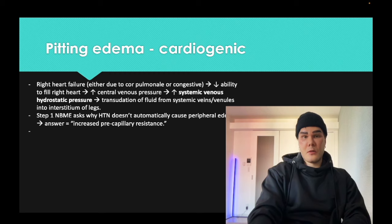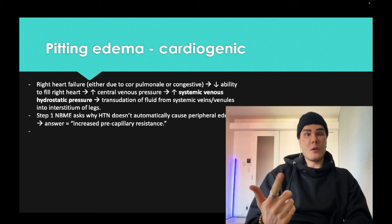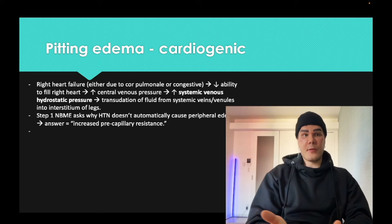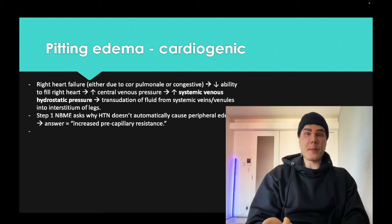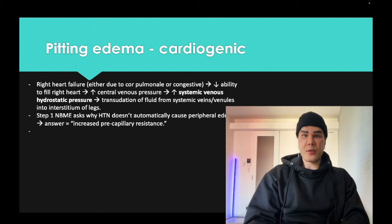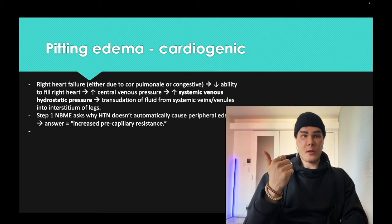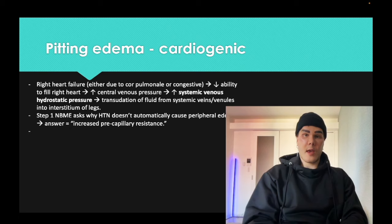For patients with systemic hypertension, USMLE wants you to know why they don't automatically get peripheral edema. Even though increased hydrostatic pressure in the veins causes edema, a blood pressure of 180 over 100 doesn't automatically cause peripheral edema — because before that blood reaches the capillary beds, there is high resistance in the systemic arterioles. The arterioles are the major source of resistance, slowing blood so that by the time it reaches the capillaries, hydrostatic pressure is acceptable and we don't get edema.